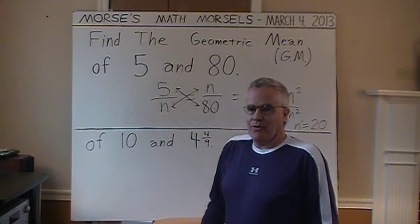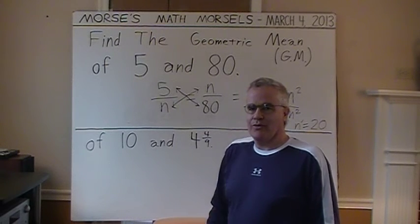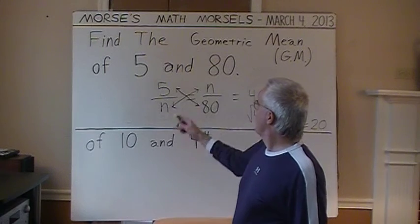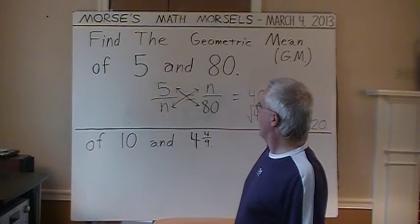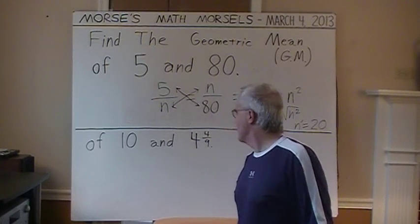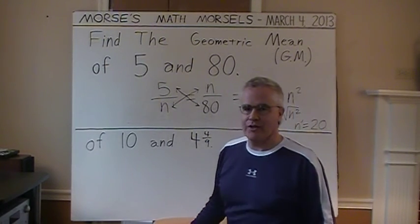And there are examples where you could have two or more numbers with several or as many geometric means as are needed. But this simple example just gives one instance involving the 5, 20, and 80. And as for the 10 and 4 and 4 ninths, that's going to be in the next video.